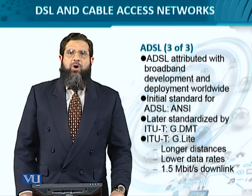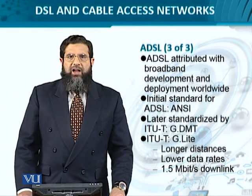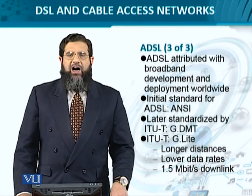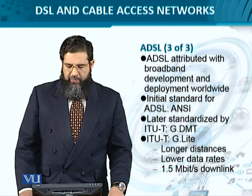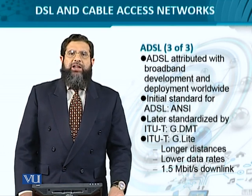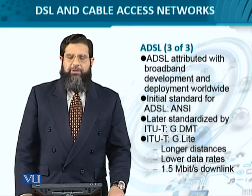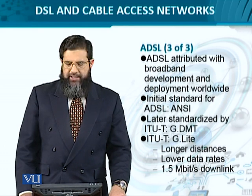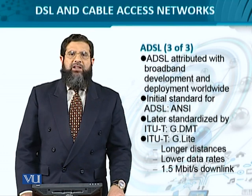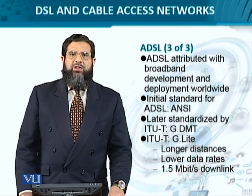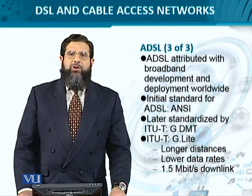For instance, the ITU-T calls it the discrete multi-tone G.DMT. For longer distances, ITU-T has another flavor of ADSL called G-Lite. G-Lite provides slightly lower data rates — around 1.5 megabits per second on the downlink, with the uplink being even smaller — but the advantage is that longer distances can be covered. This is how ADSL started to capture the attention of the world.